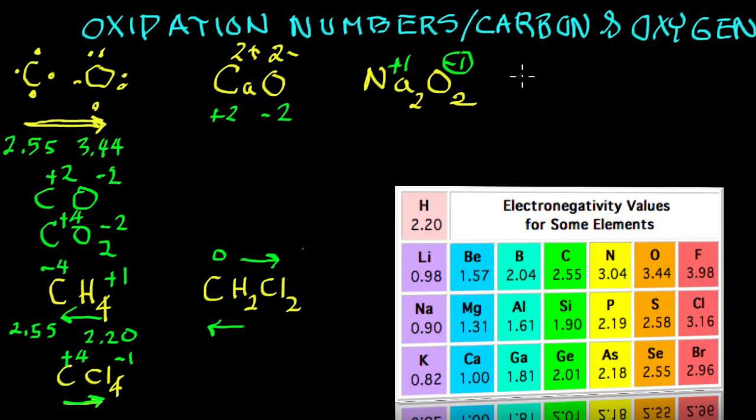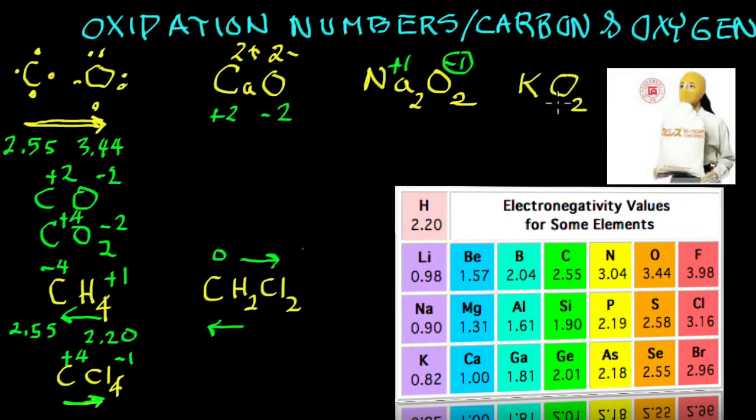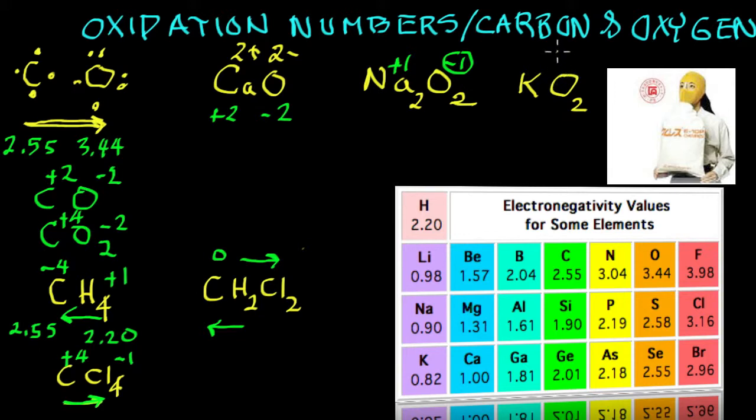Now let's look at this guy. This is a compound called potassium superoxide, very unusual compound. It's used in a special respiratory mask for people in smoke because it generates its own oxygen and absorbs their carbon dioxide.